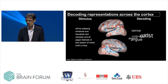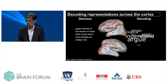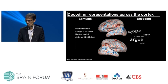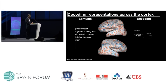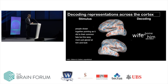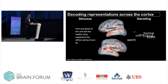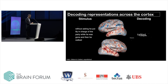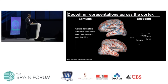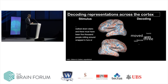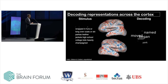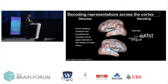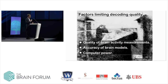For example, we can build a language decoder: 'What a crazy world we're bringing our children into... He thought it sounded like the kind of statement that brings people closer together, pointing as it did to their common fate. But the sexy mom just glared at him... He put Lily in charge of the party while he was gone, and then he walked downstairs. There must have been 5,000 people milling around wrapped in furs or long overcoats or ski parkas, leather jackets.' The decoder isn't perfect, but it's not bad. After we had our encoding models, this decoder took us one day to create — we didn't even optimize it.